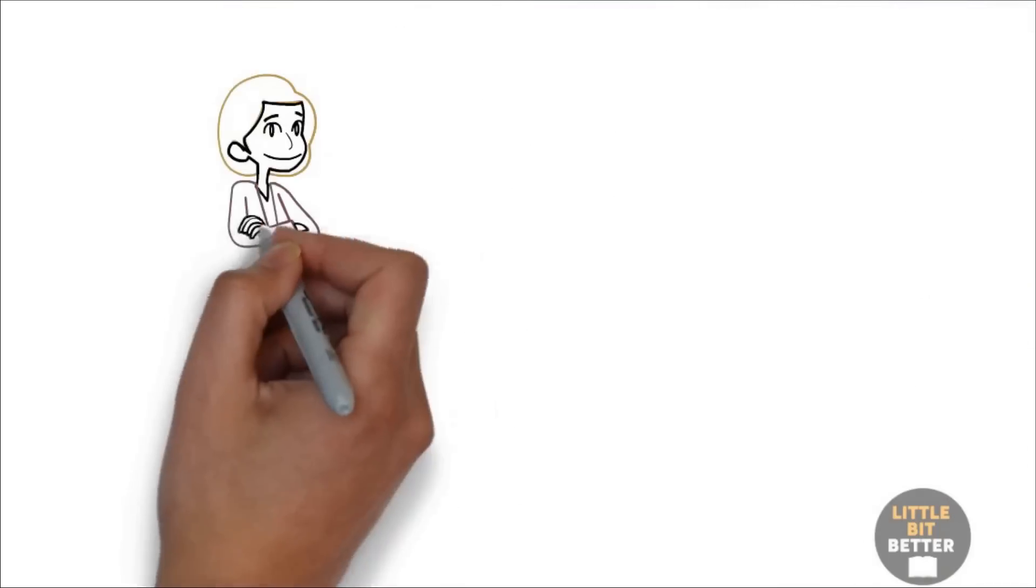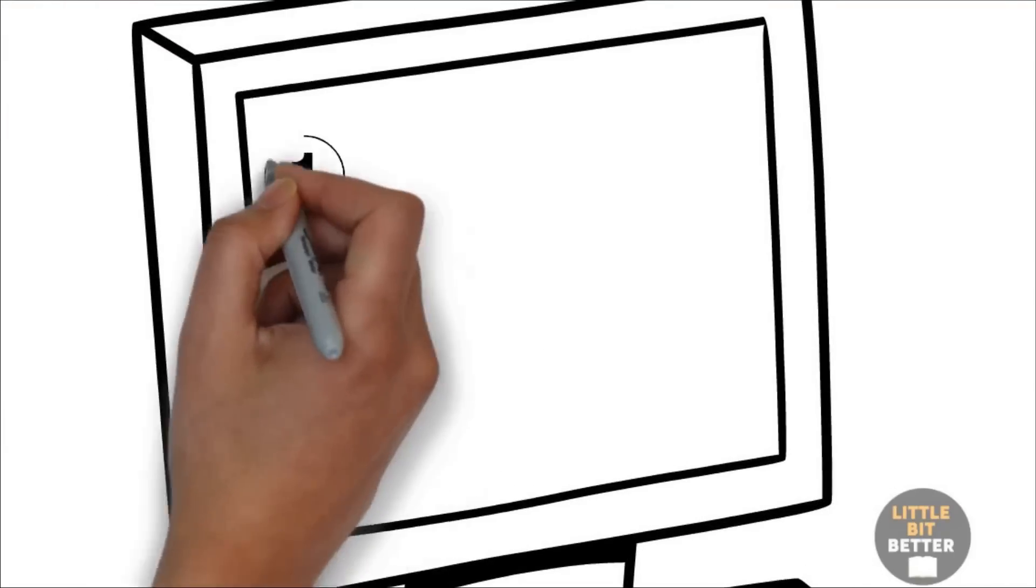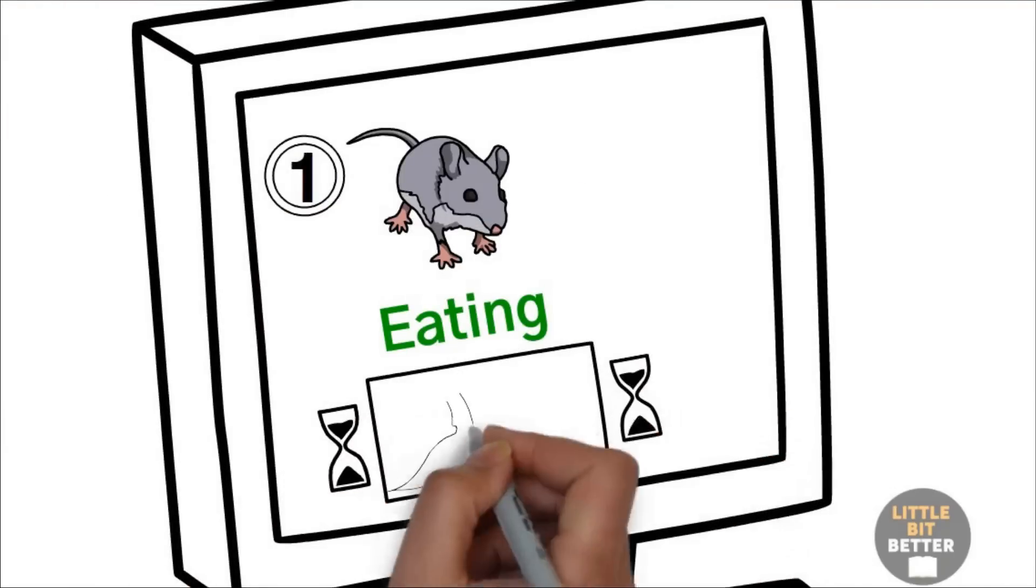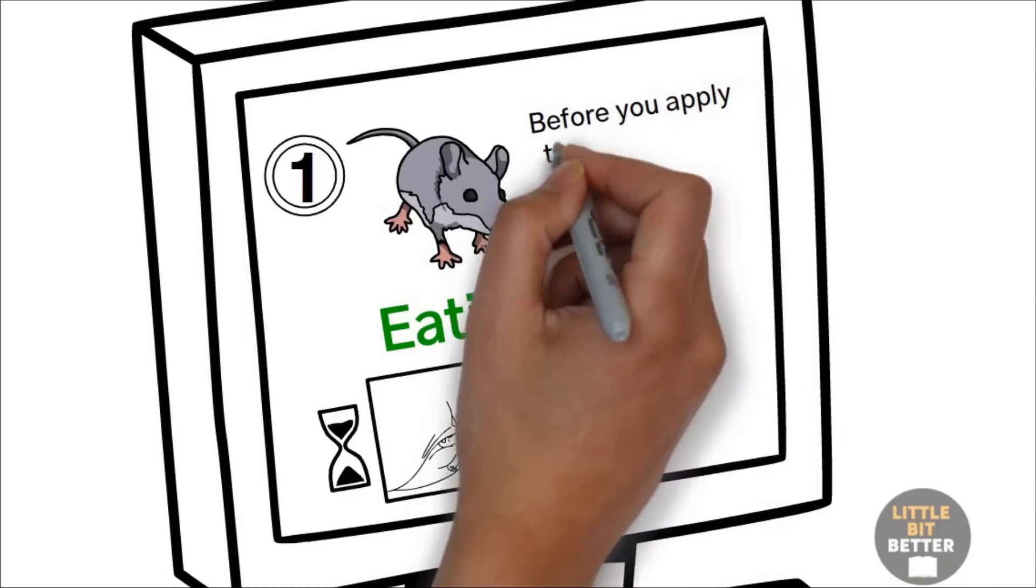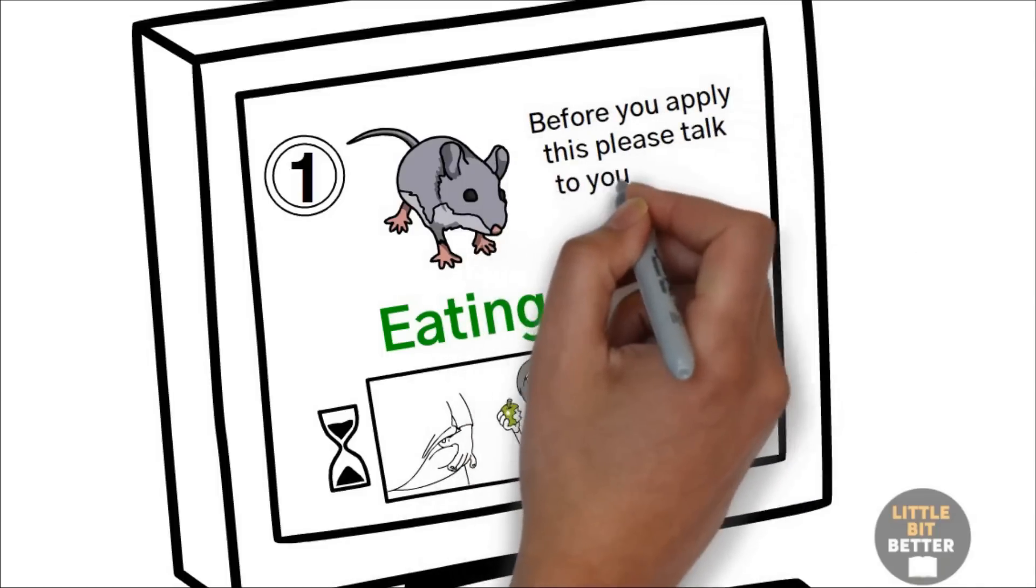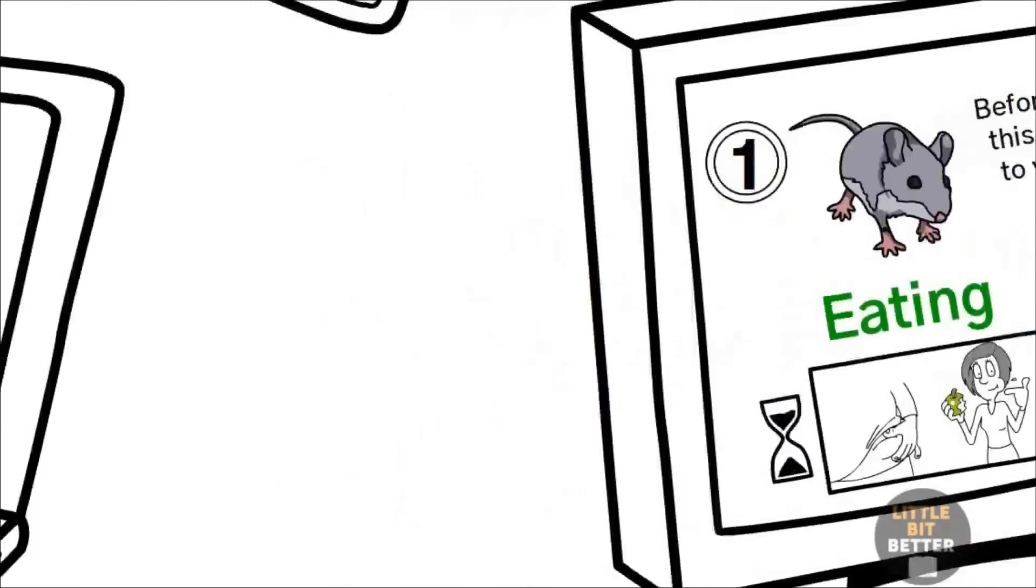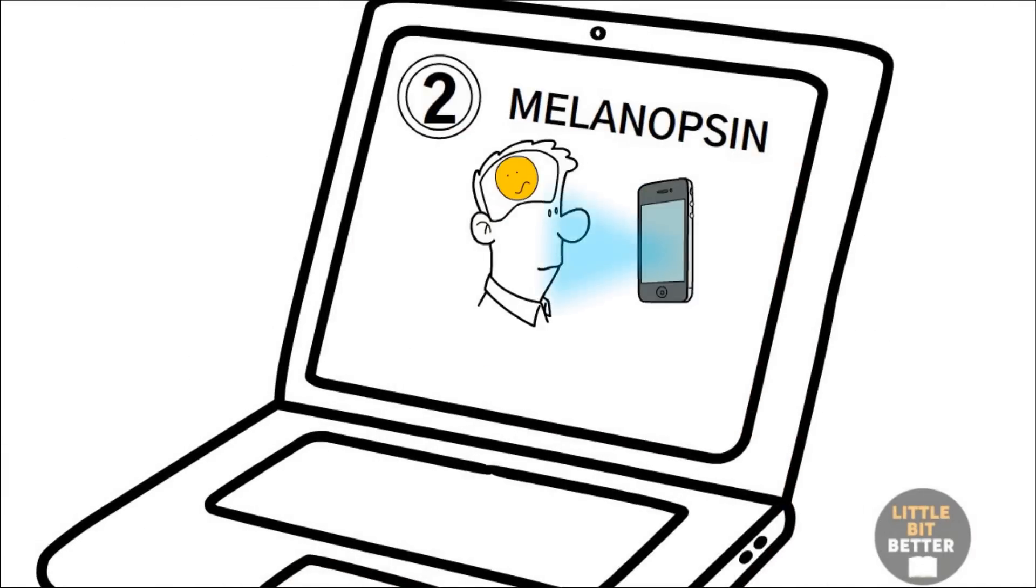This was the last lesson. Here's the summary of what we talked about in this video. Number one, as you saw from the mouse experiment, eating on a limited window will not just help you to lose weight, it will also help you to stay healthy. Before you apply this, please talk to your doctor. This is not medical advice, and I'm not a doctor. I'm just a random girl who makes videos on the internet. Number two, we talked about melanopsin and how it sends confusing signals because of the way we are living these days. Make sure to follow those nine tips to reset your circadian clock correctly.